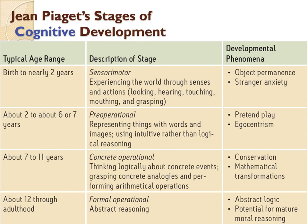The pre-operational stage is roughly ages 2 to 6 or 7. Children learn through language and words — like picture books with words beneath images. This stage also features pretend play (putting a towel around your neck to be Superman). Egocentrism here doesn't mean selfishness; it means children understand others' feelings by reflecting situations onto themselves.